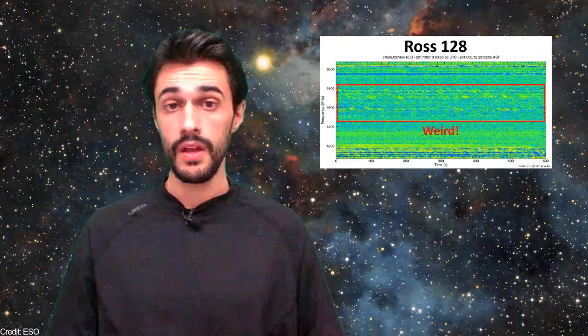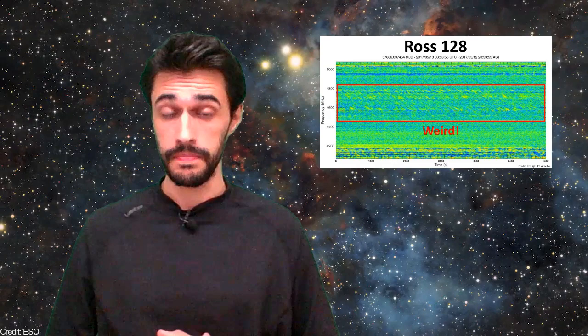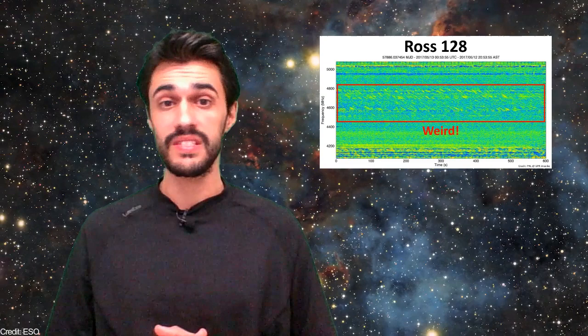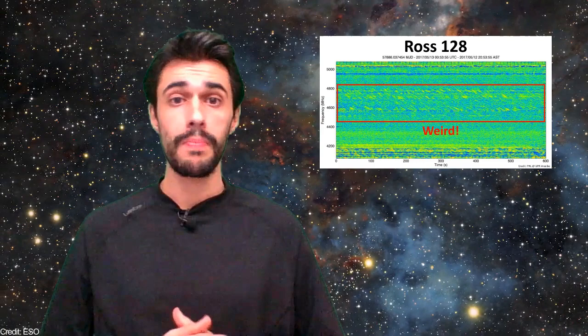In 2017, the Arecibo Observatory detected radio signals coming from the red dwarf star Ross 128. The star was observed for 10 minutes and it produced wide-band radio waves that were almost periodic. Ross 128, located 11 light-years away, has at least one potentially habitable exoplanet.